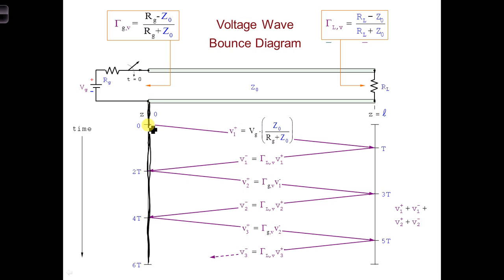So as we go down this line, at time T equals 0, we see we get V1+. At time 2T, we add on to that the V1- and V2- waves, and so forth.